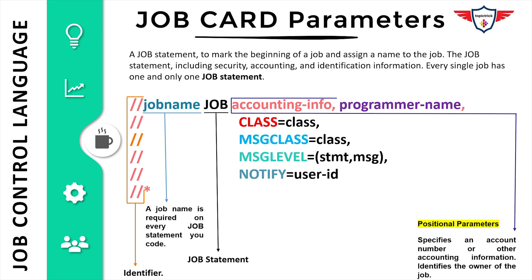Accounting information is typically used to charge the job processing time back to a specific department or group. The next parameter is programmer name, which is used to specify the owner of the job. Remember, the job statement has only two positional parameters: the first is accounting information and the second is programmer name.